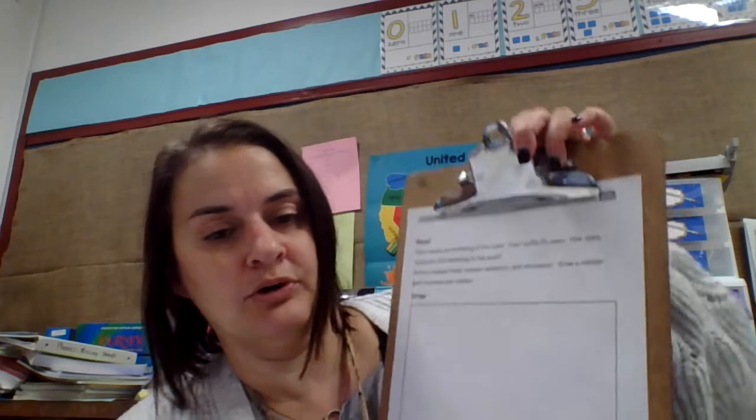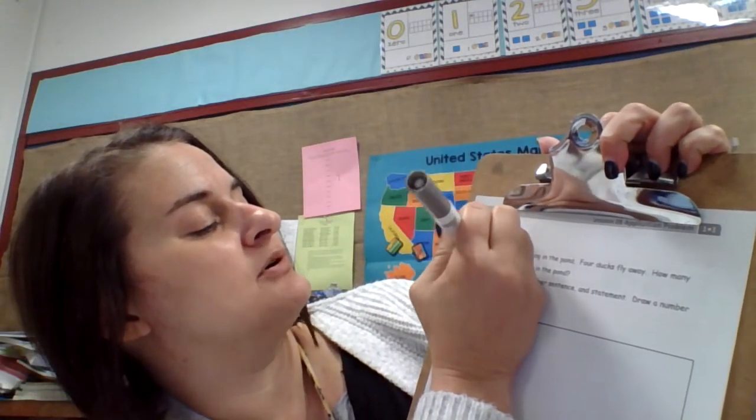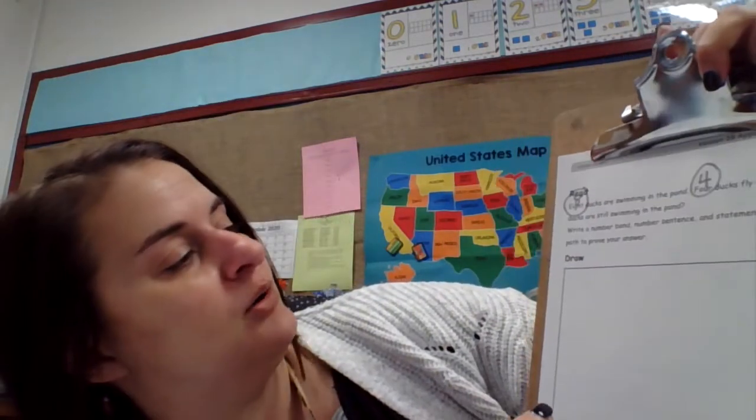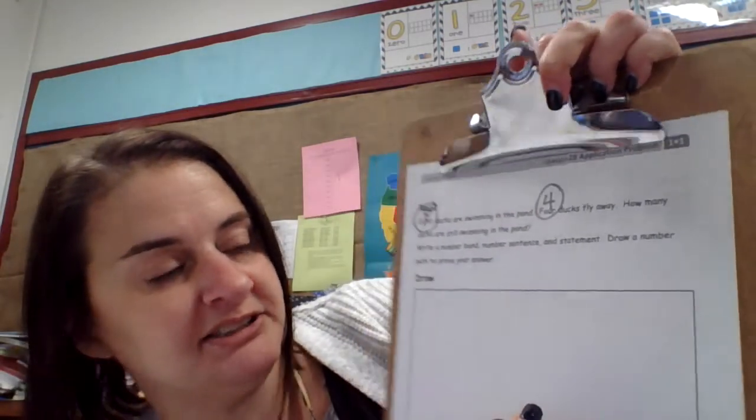And our daily word problem. Eight ducks are swimming in the pond. There is the number word for eight. Four ducks, they gave us another number word. Four ducks fly away. How many ducks are still swimming in the pond? Write a number bond, number sentence, and a statement. Draw a number path to prove your answer.